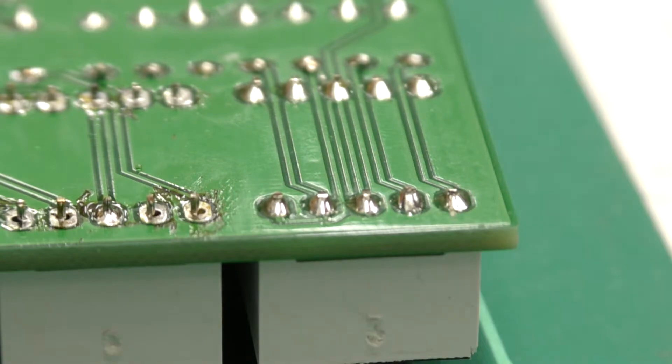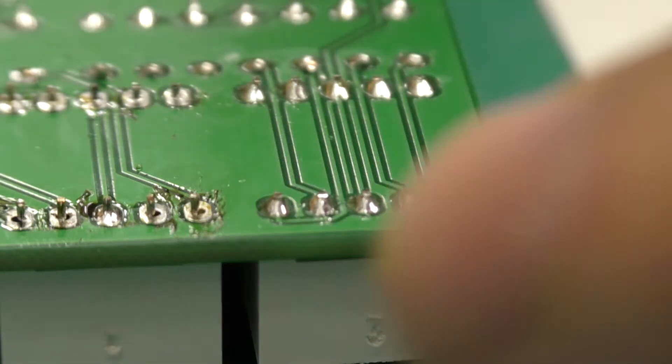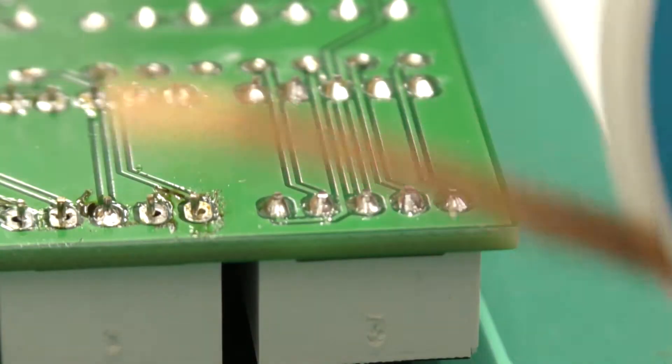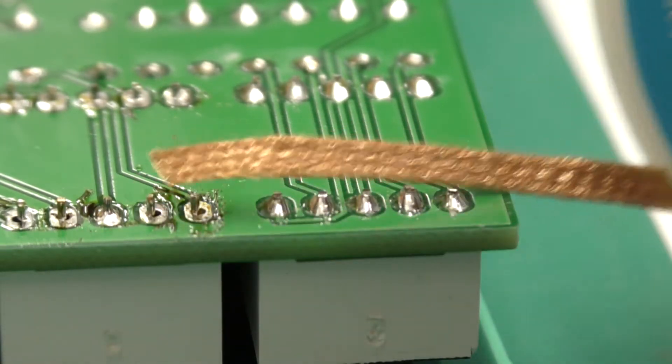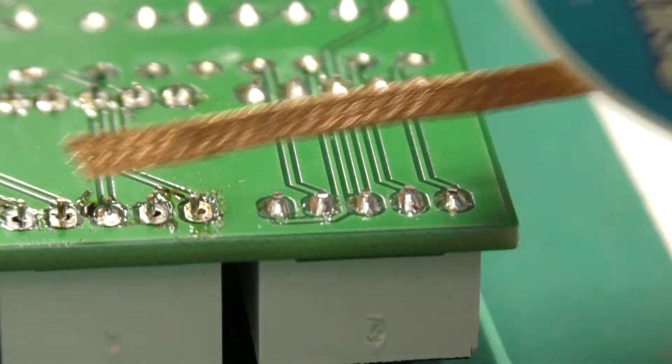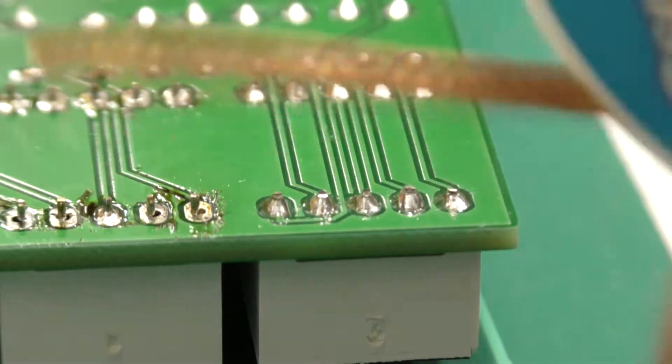So let's say that was the component there that we need to desolder. All I need to do is use the larger braid. So I'm trying to show you by comparison, it's size by comparison.